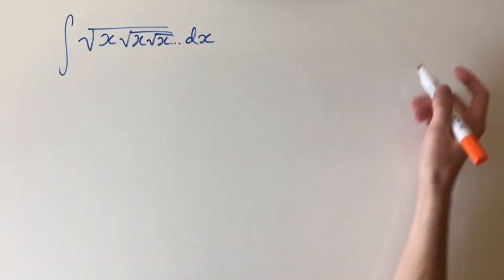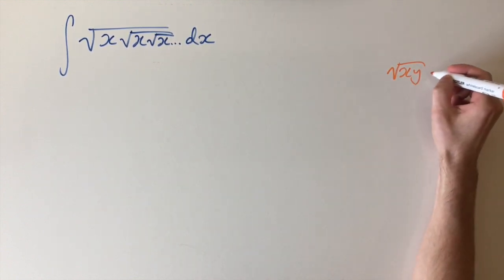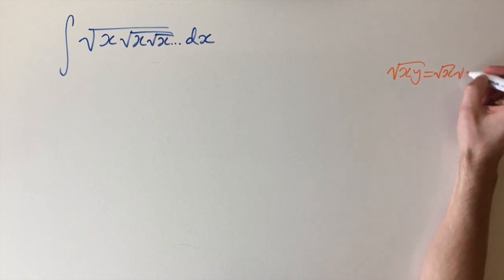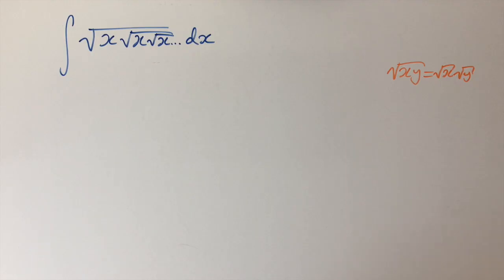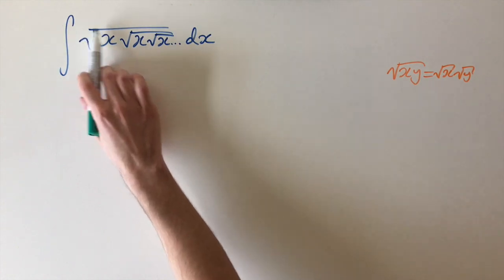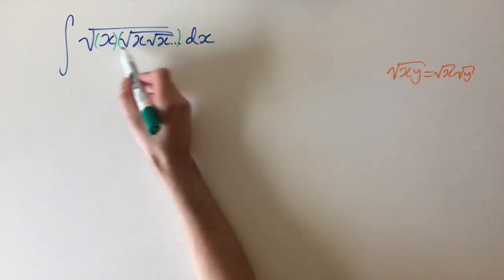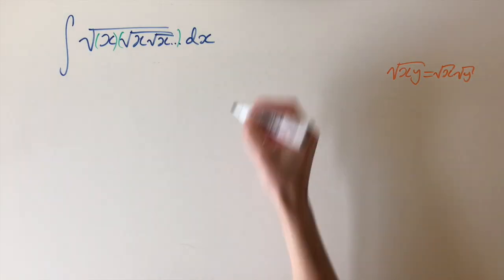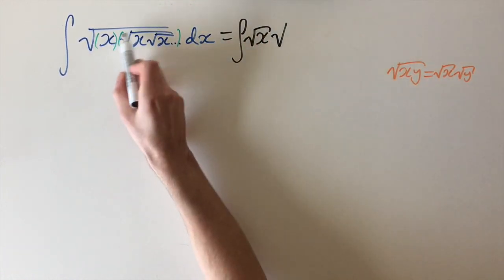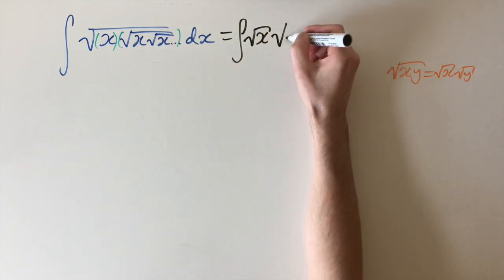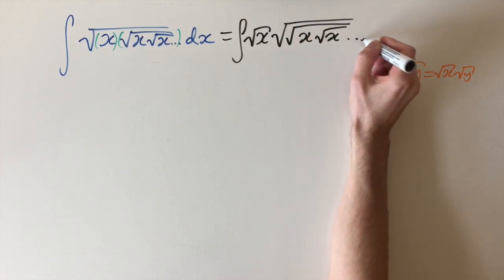The first method relies on the law of roots, which states that the square root of x times y is the same as the square root of x times the square root of y. The idea is to split this up into separate terms involving square roots. Applying this law to the first square root, we split it as x and then the rest of the infinite expression as the second term. This gives us the integral of the square root of x times the square root of the second term — which is itself another square root of x times another square root — and this carries on until infinity, dx.